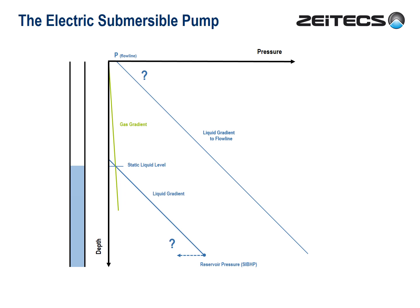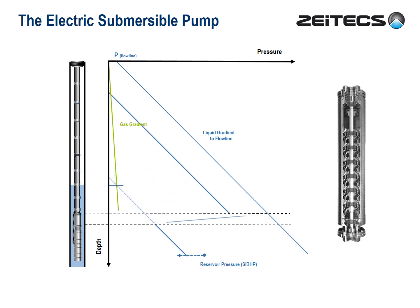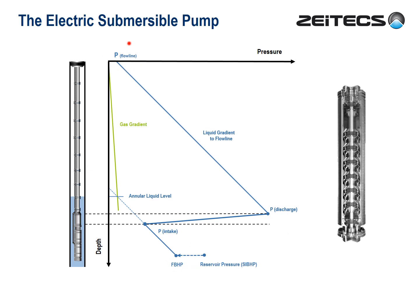The problem is there's a big gap between the static liquid gradient and where we need to be. So let's run an ESP — it's sitting in the well at this depth. The pressure generated over its length enables us to achieve both objectives: draw down and flow line pressure. Notice how the liquid level in the annulus drops as it responds to the new, lower flowing bottom hole pressure.